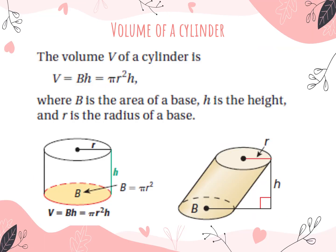This slide has the formula for volume, and this will be on the test. The volume of a cylinder is capital B times the height. The base shape is a circle, so capital B is pi r squared. It can also be an oblique cylinder, which looks like a slanted cylinder. The height will always be indicated by a right angle — it's not going to be a slanted height; it always has to have the perpendicular symbol.